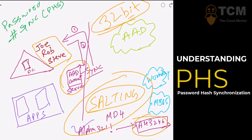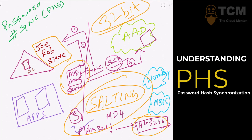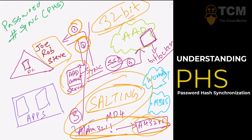Step four: the Azure AD Connect server sends all of this data to the cloud over SSL. Step five: the values received are stored inside Azure Active Directory, and that storage is encrypted with BitLocker. To summarize: step one is the sync engine contacting the DC; step two is sending changes in MD4 format; step three is rehashing and salting; step four is sending to Azure AD; step five is encrypting with BitLocker.